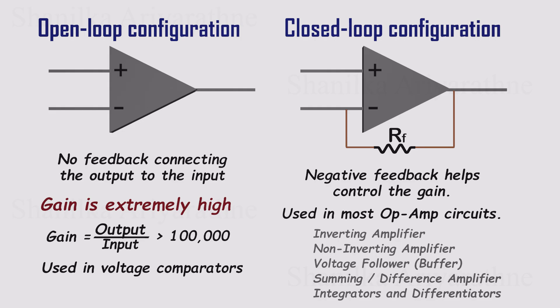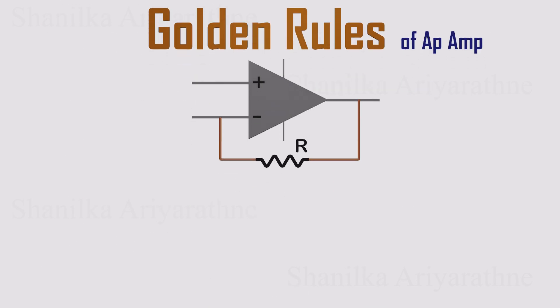In this video, we're focusing on two closed-loop configurations: the inverting amplifier and the non-inverting amplifier. To analyze them, we use two simple but powerful rules, often called the golden rules of op-amps. They come from the ideal behavior of an op-amp, and they make circuit analysis much easier.